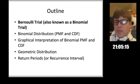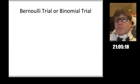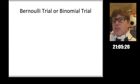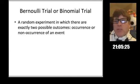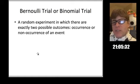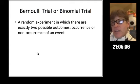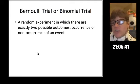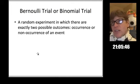Let's begin with a discussion of what a Bernoulli trial is. A Bernoulli trial is basically a random experiment in which there are exactly two possible outcomes — either an occurrence of an event or a non-occurrence of an event. The classic case is when you toss a coin: the coin is going to land either heads or tails. You can think of heads as the occurrence of an event, and tails as the non-occurrence of the head event.